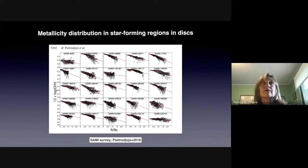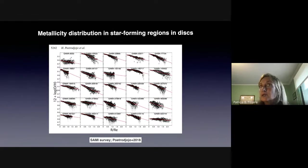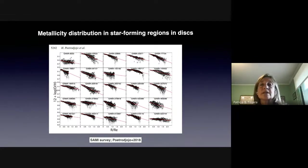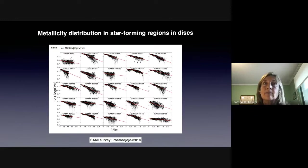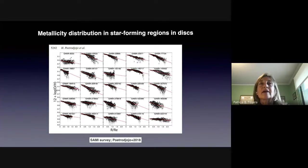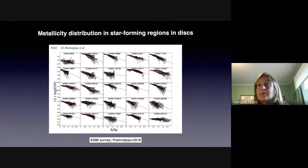One of these features is metallicity gradients. I'm going to talk about the metallicity gradients of HII regions or star-forming regions in these galaxies. Observations show us, for many years now, that galaxies have negative metallicity gradients, implying that the central regions of galaxies are more enriched than the outer parts. As you can see in this set of galaxies' metallicity profiles from the SAMI survey, all these galaxies tend to have negative metallicity gradients — some quite flat or weak, others steeper.